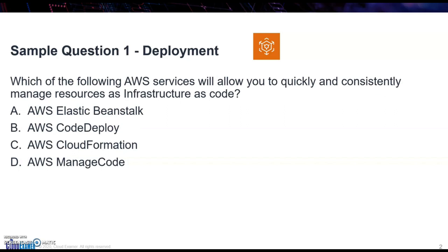Let's say you deploy that on the US East Virginia region. You'll be able to manage your resources there, but if you want to quickly and consistently do the same thing on another region — say US California — you can take the same template and deploy it to that other region. That's what 'quickly and consistently' means, and it also is infrastructure as code.